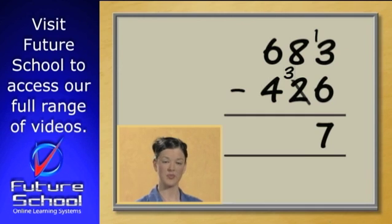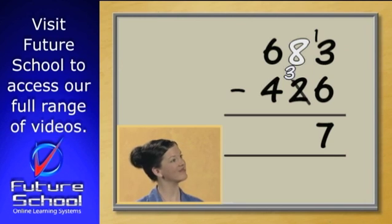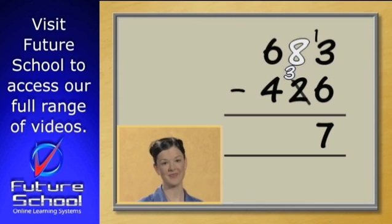In the tens column, we have 8 take away 3. And the answer to that is 5. Put the 5 in the tens column.